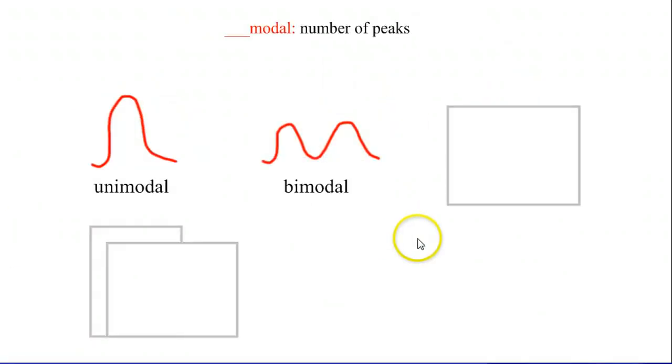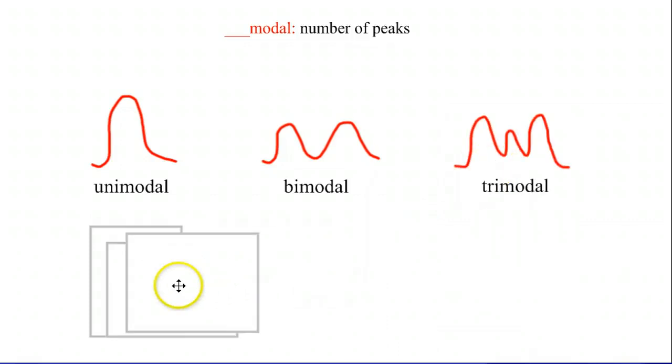If you have two peaks, you'd call it bimodal. Three peaks, probably guessed it, trimodal. So you just add a little word in front of it. You're not going to see graphs that are really more than trimodal, because generally there would be lots of crazy data going on. That's really the most you're ever going to describe.